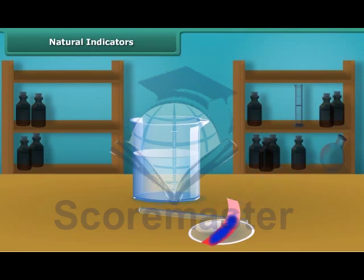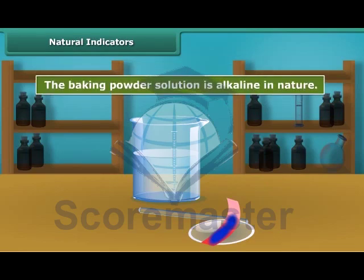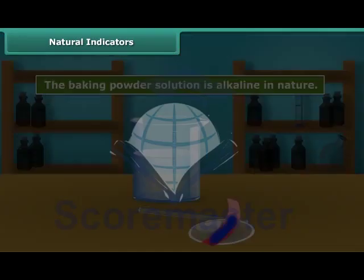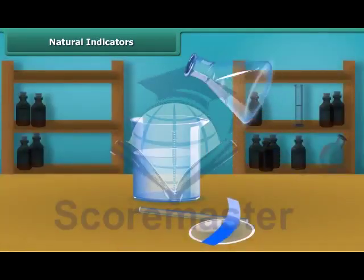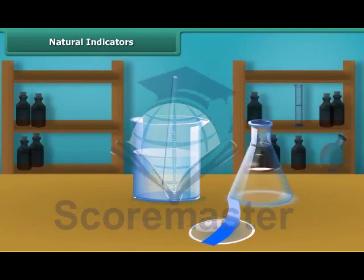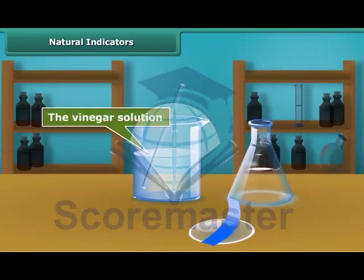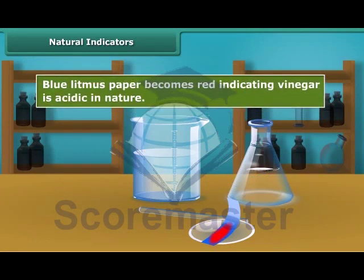Red litmus paper turns blue, indicating that the baking powder solution is alkaline in nature. Again, dip a clean stirrer into the vinegar solution and put one drop on blue litmus paper. The blue litmus paper becomes red, indicating vinegar is acidic in nature.